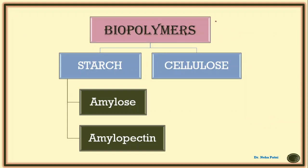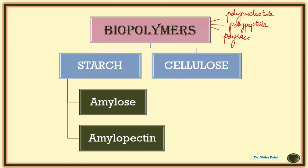If we divide biopolymers based on their functional groups or structure, there are basically three types. First, polynucleotides, where the monomers are nucleotides — examples include RNA and DNA. Second, polypeptides, which are proteins with amino acid monomers. Third, polysaccharides, which are carbohydrates. Today we'll focus only on polysaccharide biopolymers.